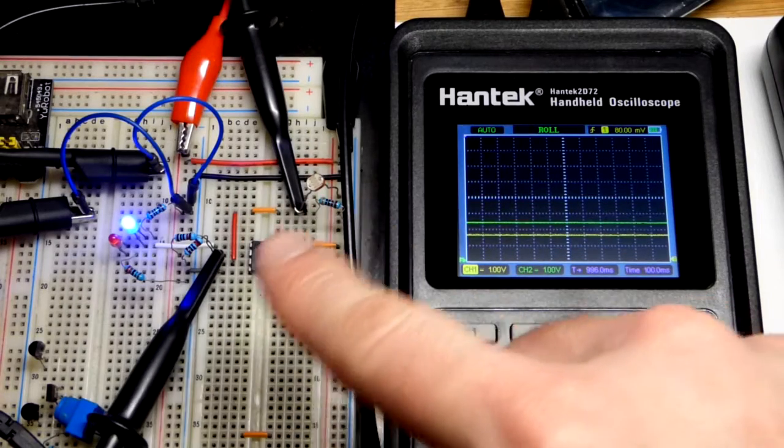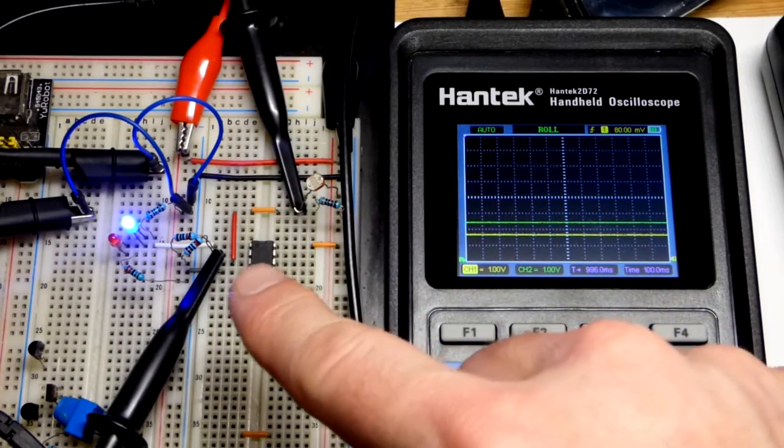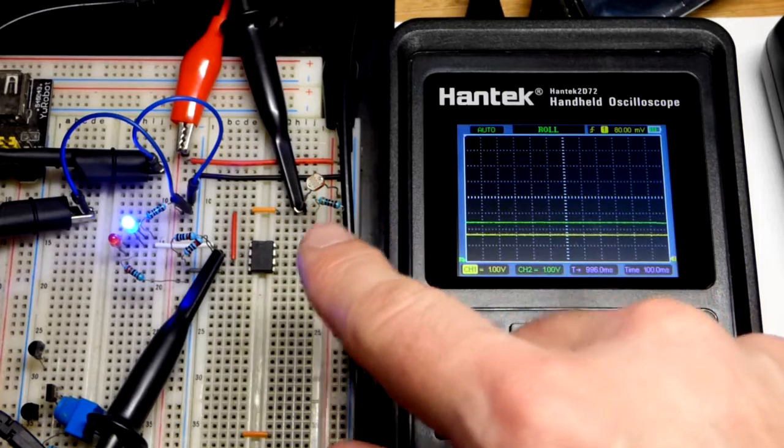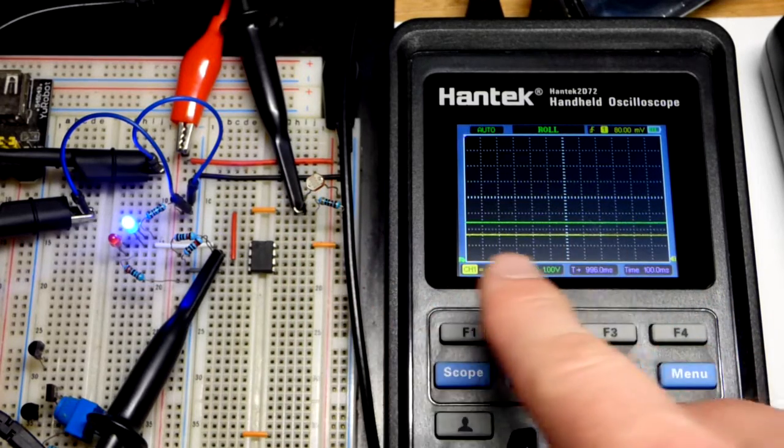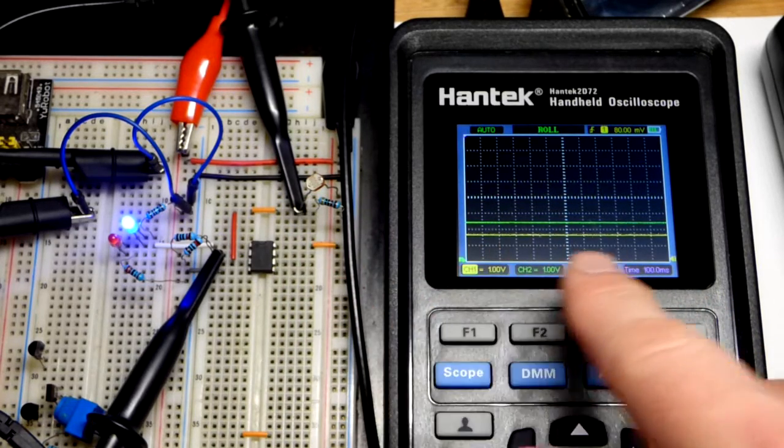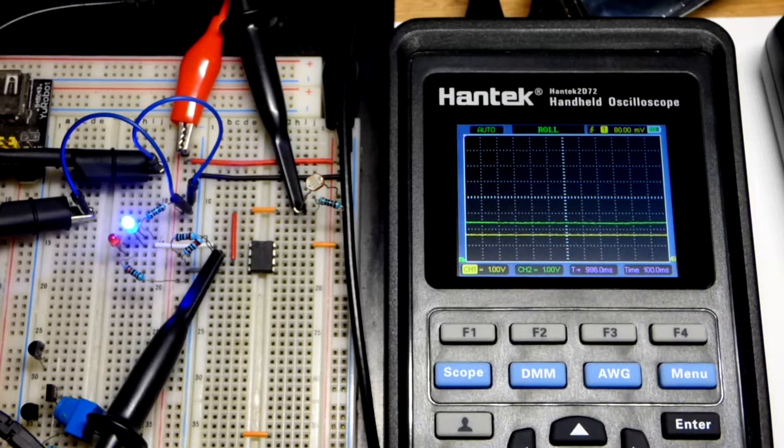So now in this video we improved the op amp non-inverting comparator circuit that we had in the last video. We had a trim pot, now we have a light dependent resistor. So our signal is going to depend on the light level.